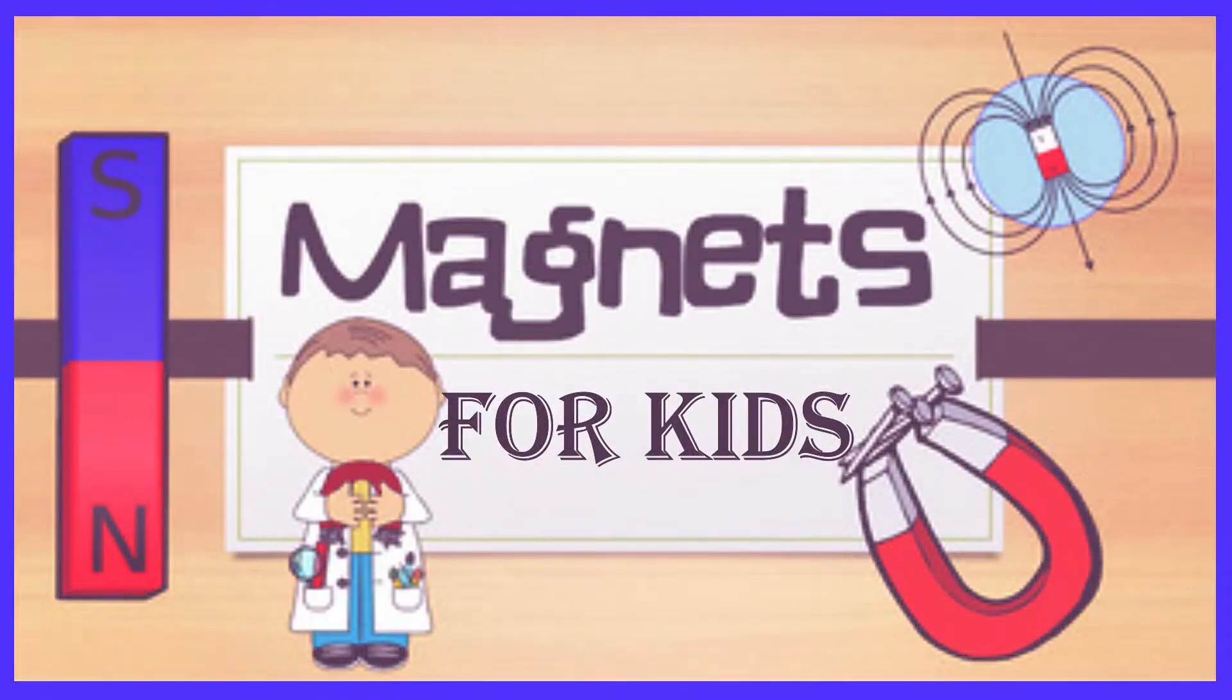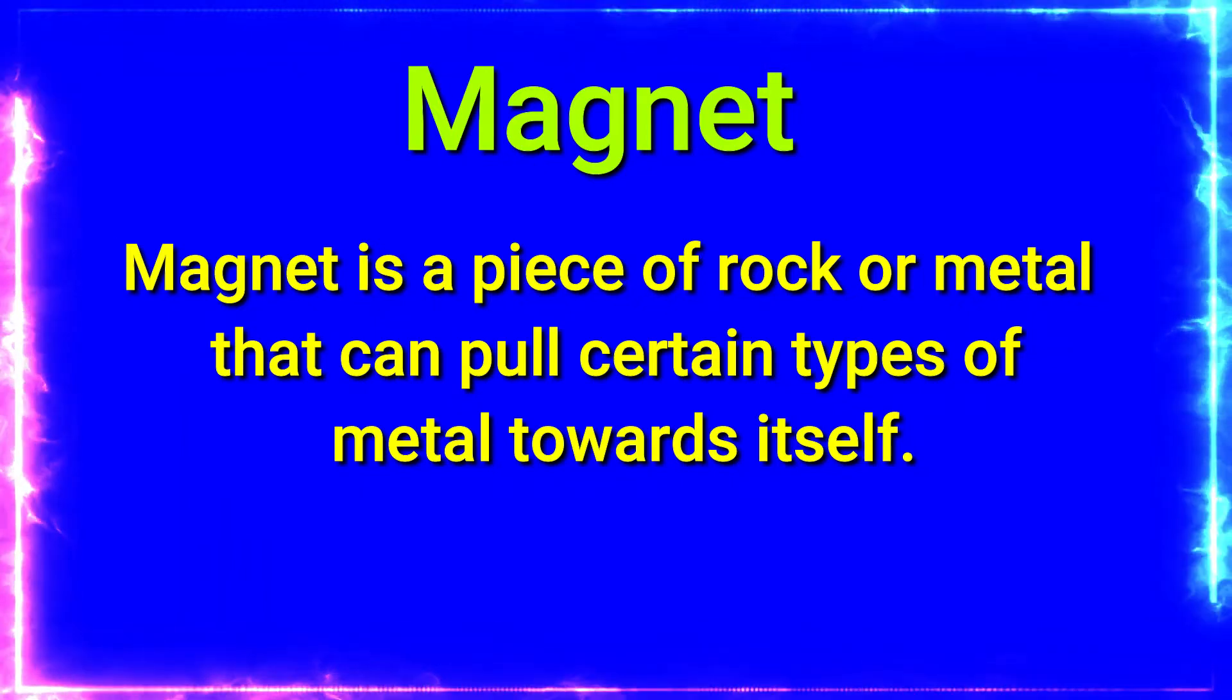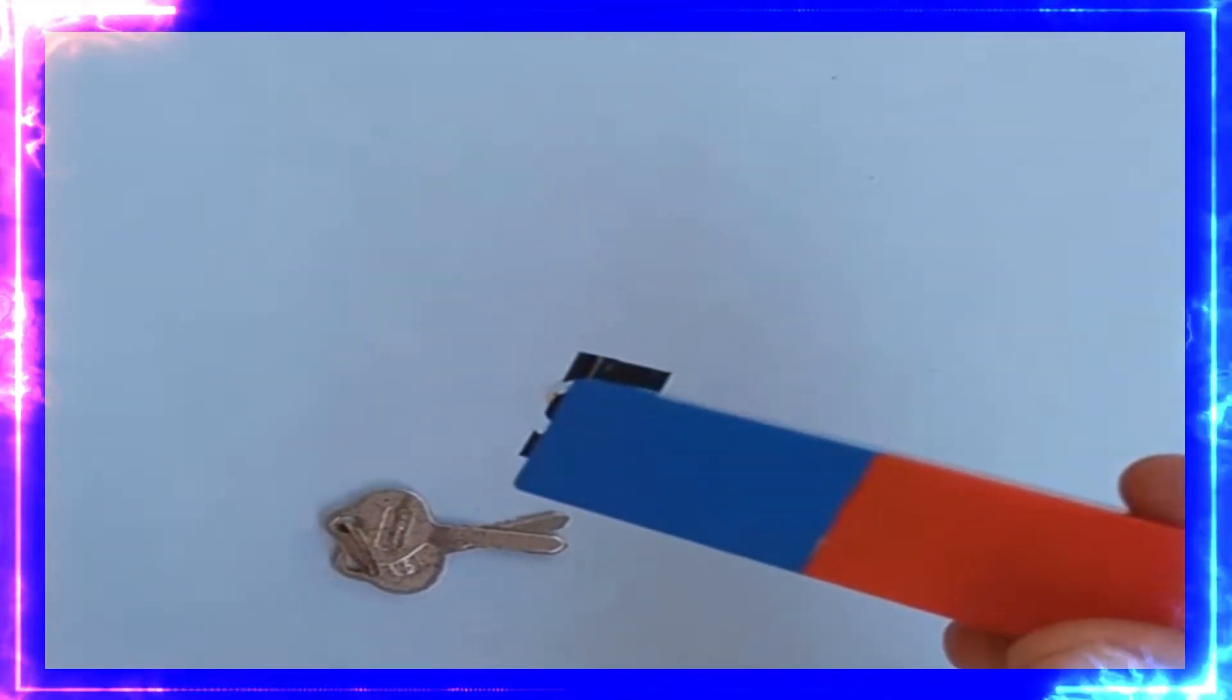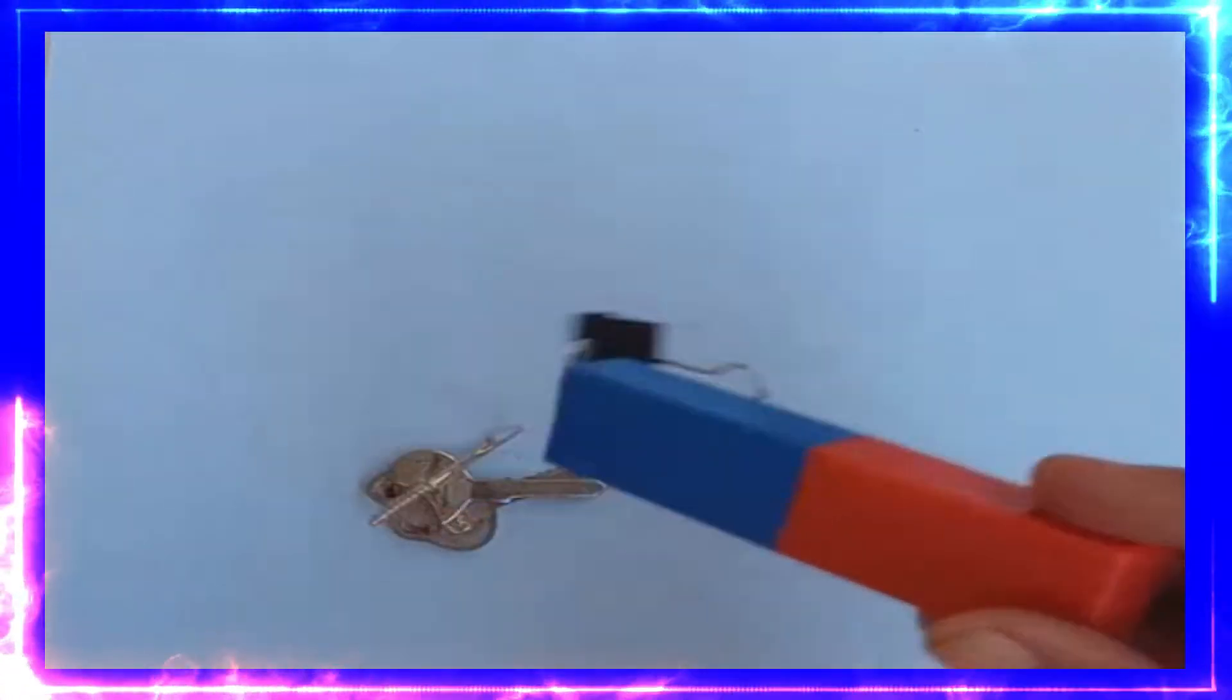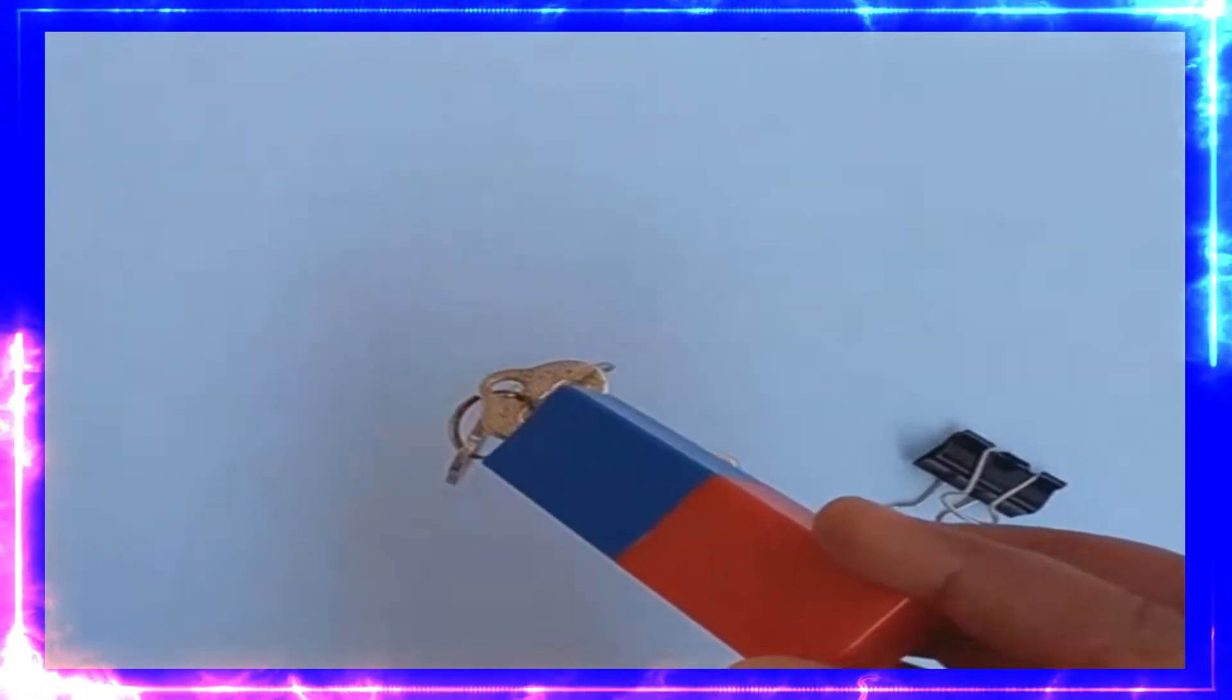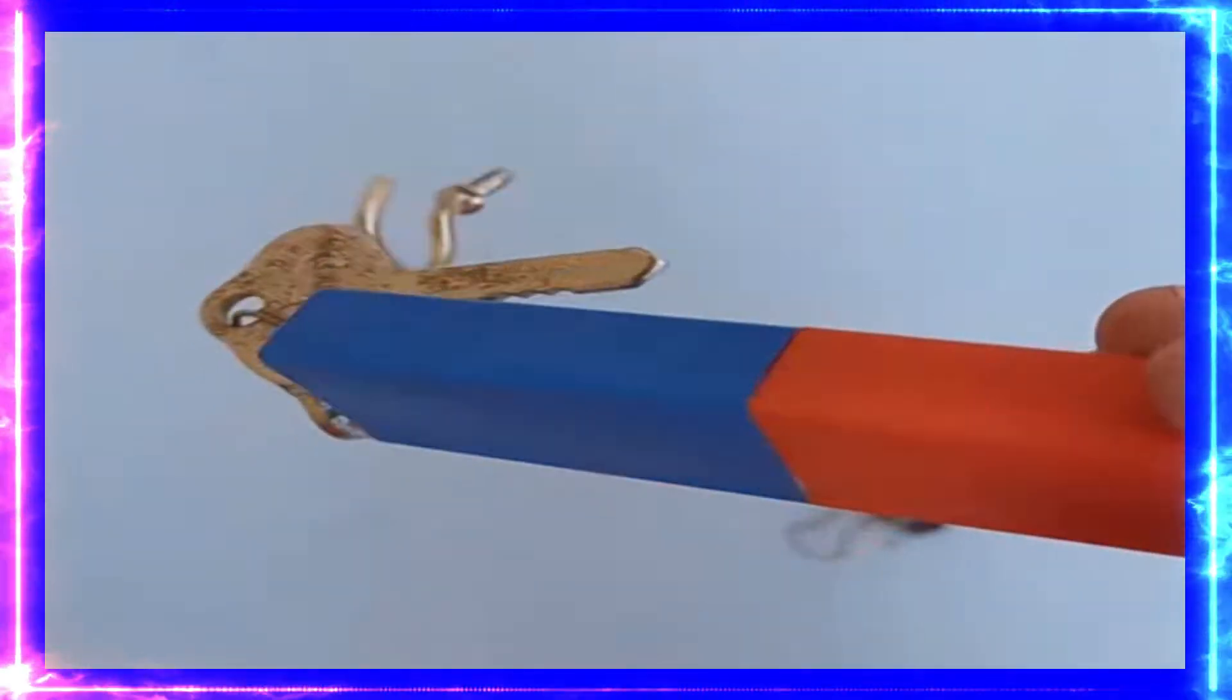Hello everyone. Let's learn about magnets. What is a magnet? A magnet is a piece of rock or metal that can pull certain types of metal towards itself. And the force of magnets is called magnetism.